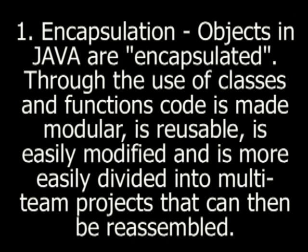Java, like several other object-oriented languages, combines certain key features. Objects in Java are encapsulated through the use of classes and functions. Code is made modular, is reusable, is easily modified, and is more easily divided into multi-team projects that can then be reassembled.